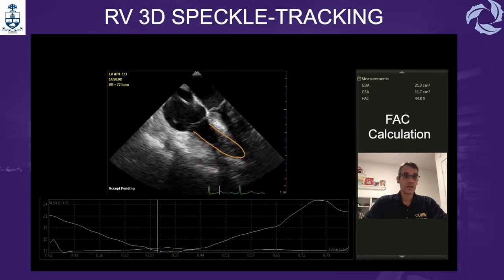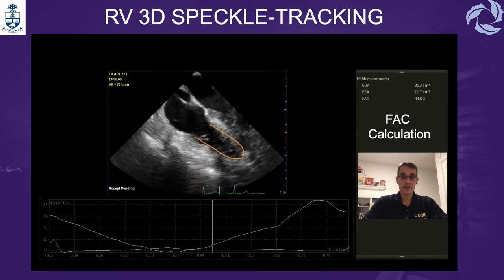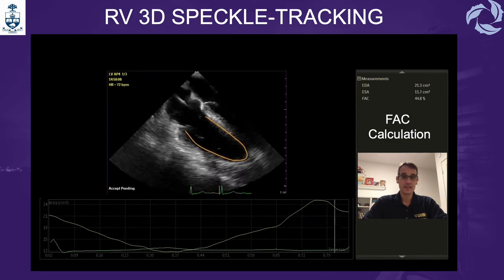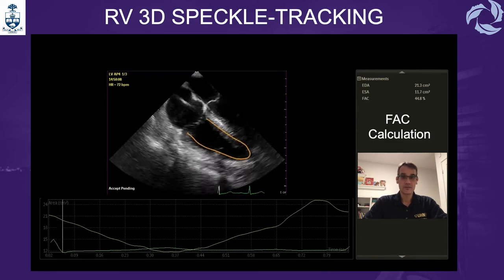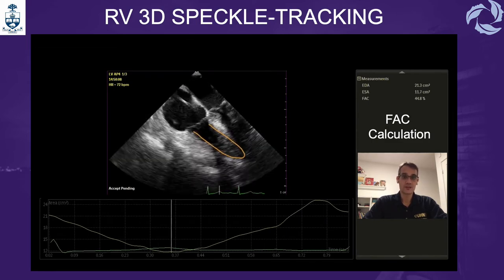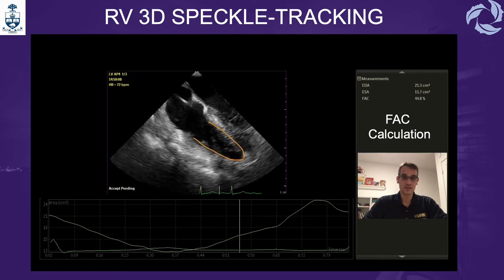Additionally, speckle tracking without strain can be used for the right ventricle to determine the fractional area change.